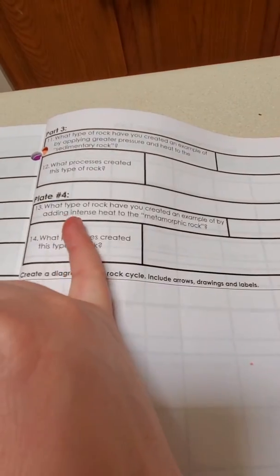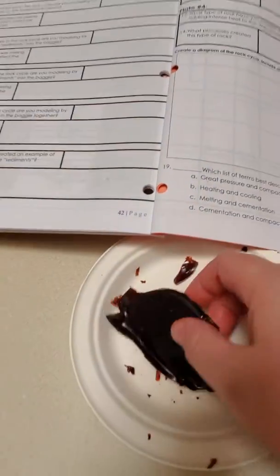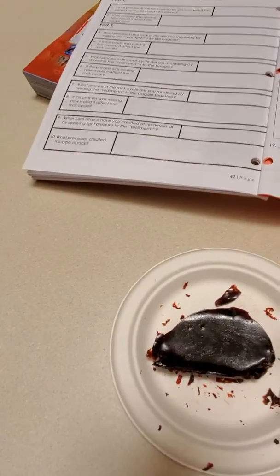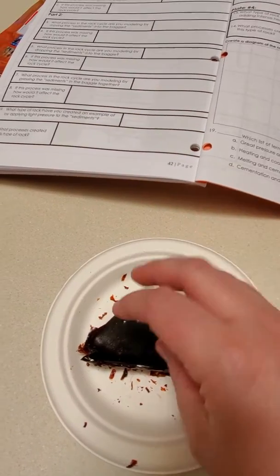Right, so you should be able to answer the questions. What type of rock did we create after we hardened it in my freezer? And then what process created this type of rock? Don't forget the freezer part. I stabbed myself with part of my rock. That hurt. Ouch.